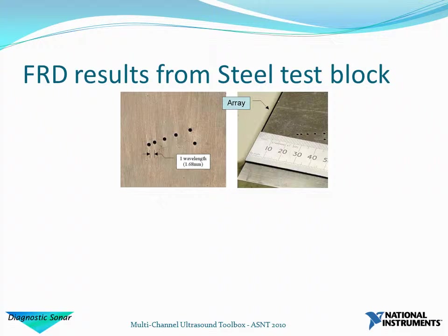Here we have a test block. On the right-hand side picture you'll see we've got the array mounted on the test block. Starting around about 25mm into the test block, we have a series of side-drilled holes, with details shown on the left-hand side. The key thing is that at the 3.5MHz transducer frequency, the gap between the first two holes is less than one wavelength, so this provides a real challenge to our imaging.